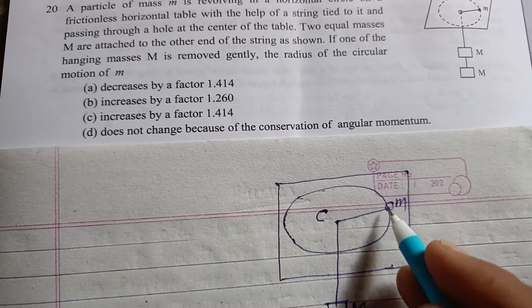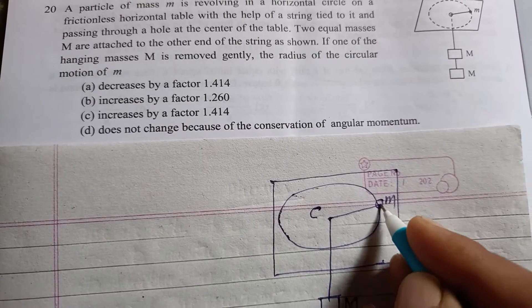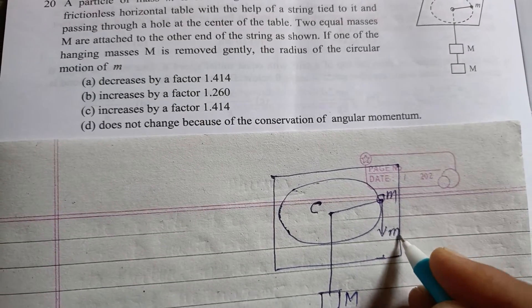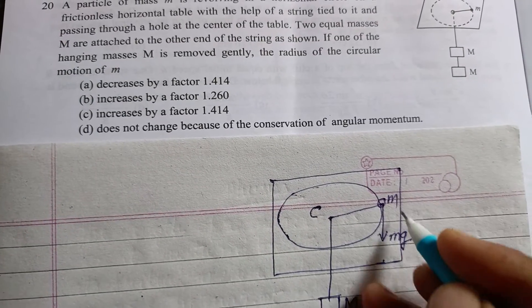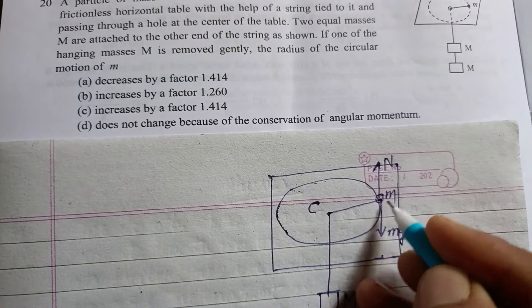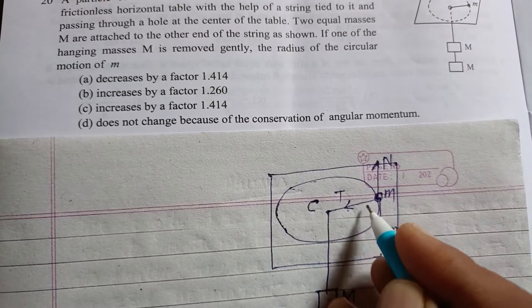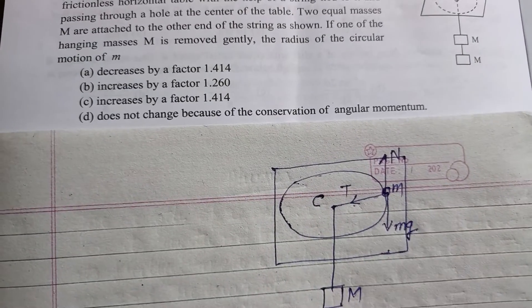So students, first we consider the force on the small m mass. Its weight is working in the downward direction, and its normal reaction of the table is N, and this is the tension which is given by the centripetal force.